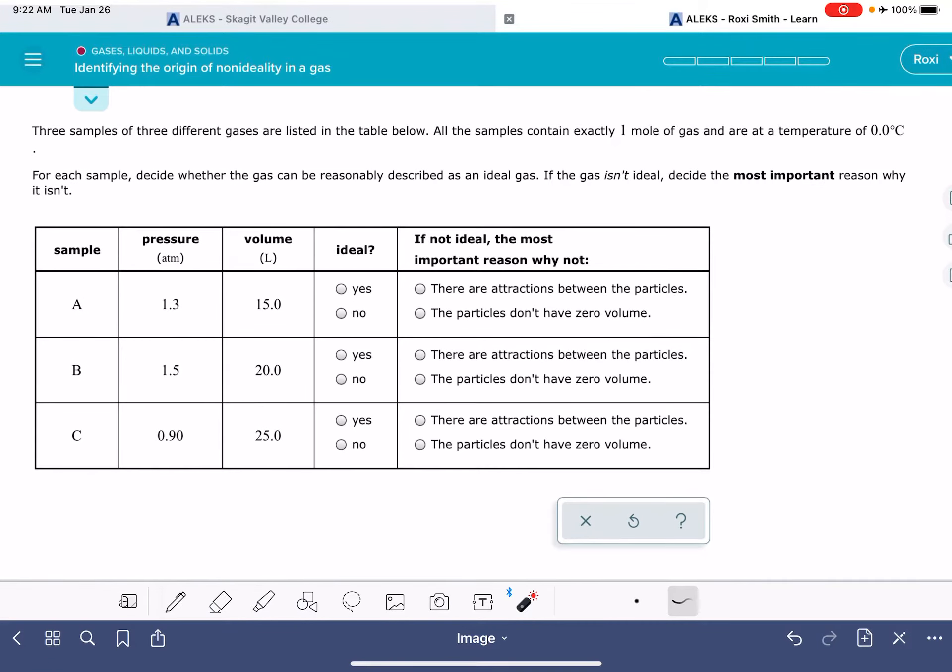In this video, I'm going to walk through how to solve identifying the origin of non-ideality in a gas. You're going to have three samples of gas. It tells you that they all contain one mole and they're at a temperature of zero Celsius. They each have different pressure-volume combinations, and you're being asked to determine whether or not the gas is ideal, and if the gas is not ideal, why is it not ideal?